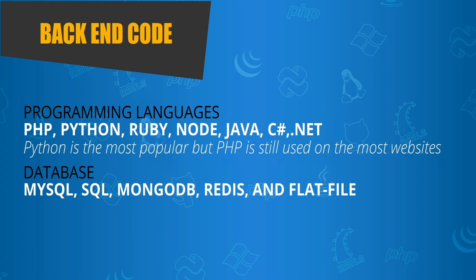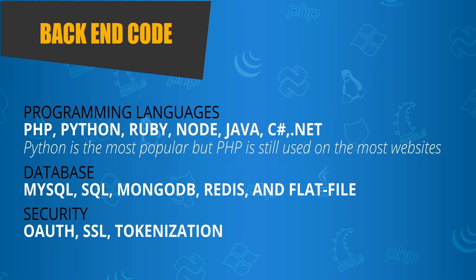Lastly, one thing a lot of developers do not take seriously is security. Website and database security should be a top priority when writing code. When you work with security, you may use tokenization, SSL, and OAuth, just to name a few. When connecting to a database, you have to use security to prevent SQL injection and hacking, or you have to use encrypted strings and URLs. Security is a big concern — it's too big to get into this video, but it is something that should be handled on a development or server level.